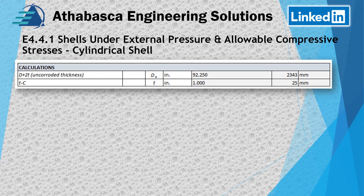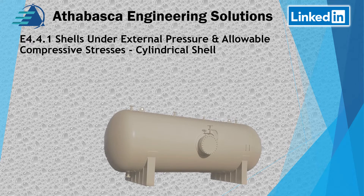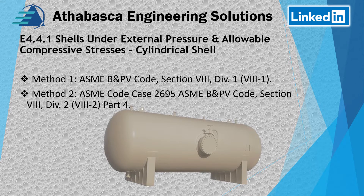We have our calculations: the uncorroded thickness T minus the corrosion allowance C, and we rearrange using outer diameter DO and the thickness T. We'll follow Method 1, which is the most common. There's also a Method 2 — Code Case 2650 — which allows the use of Section 8 Division 2 Part 4. We'll do Method 1 first.